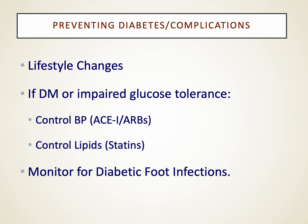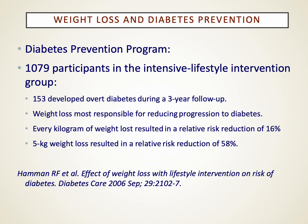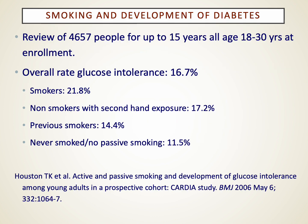We monitor for diabetic foot infections, which become major issues. Good data over the last few decades shows that patients who lose a significant amount of weight reduce their risk for developing diabetes by 50% or more. A study showed up to a 5-kilogram weight loss with a 58% relative reduction in risk for developing diabetes. That's pretty good for just some lifestyle modification. We also look at reduction in smoking, which clearly has an effect on glycemic control.